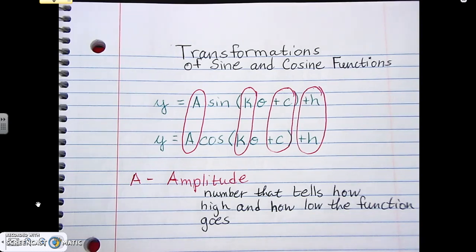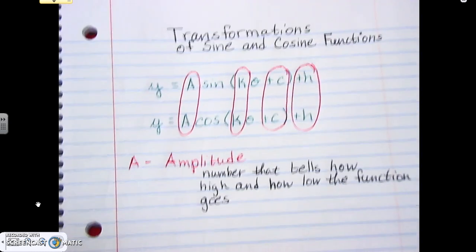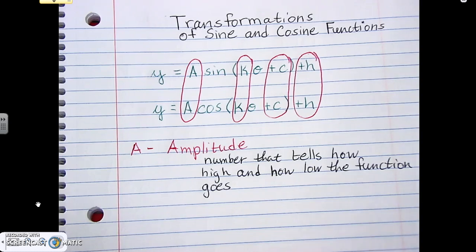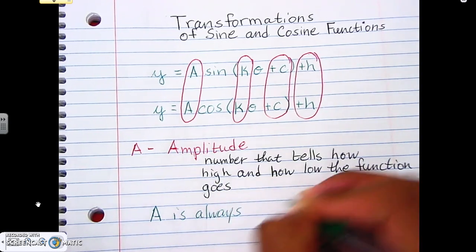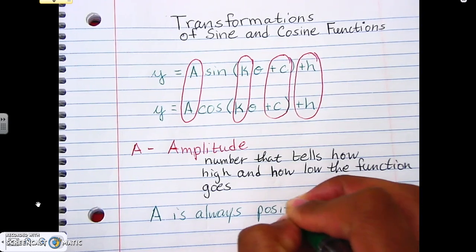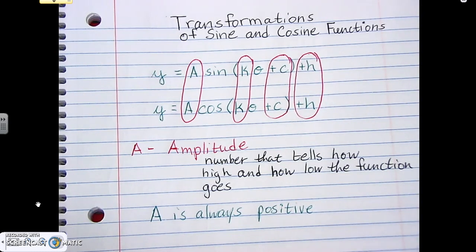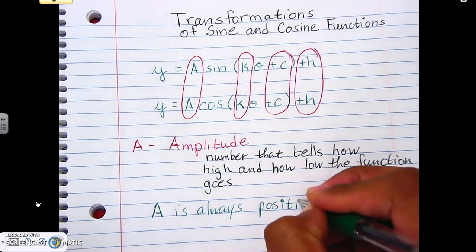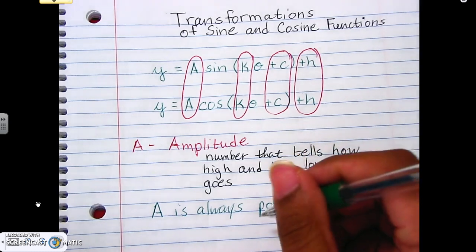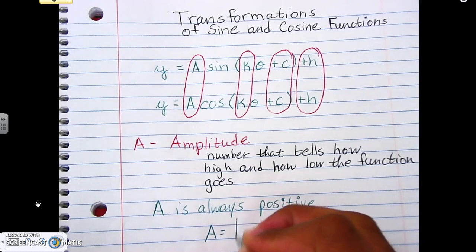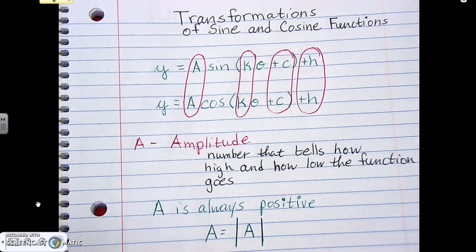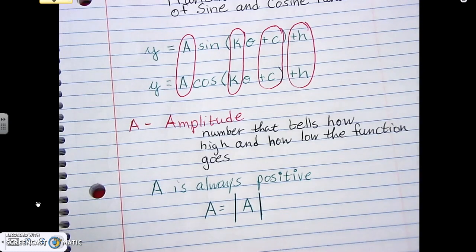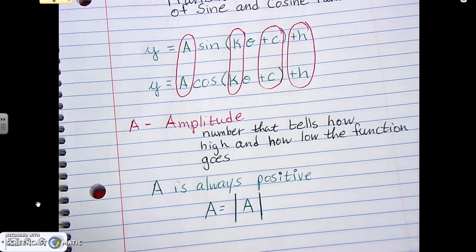Amplitude is kind of like the shrink-and-expand concept. The most important thing is that A is always positive — your amplitude is always a positive number. Remember, if there's a negative in front it means the whole thing is flipping. So A is always that positive number, and whenever we deal with A we always use the absolute value of whatever A is, making it positive.